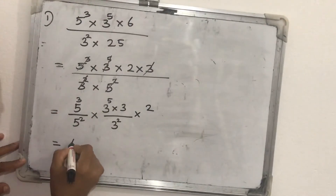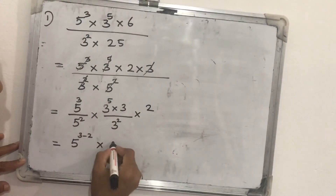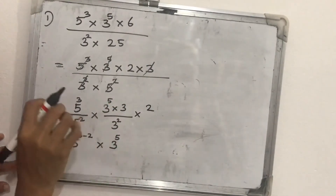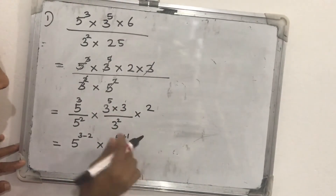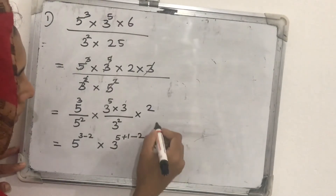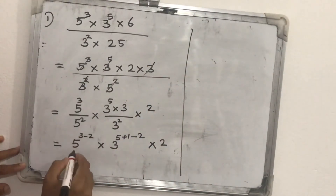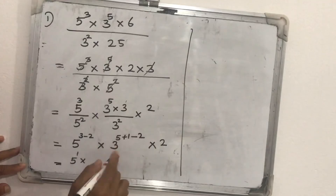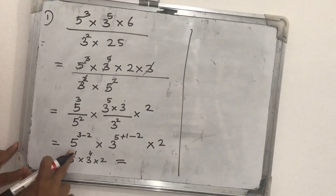Now applying the laws: five cubed divided by five squared is five raised to three minus two, which is five raised to one. For the threes: three raised to five, times three raised to one, divided by three squared. Since three with no written power means three raised to one, we get three raised to five plus one minus two, which is three raised to four. So we have five raised to one, times three raised to four, times two.